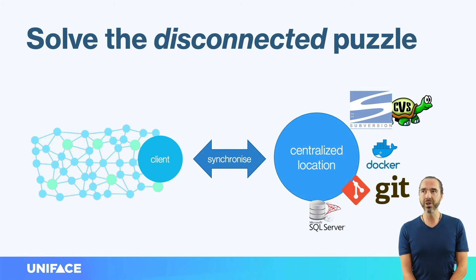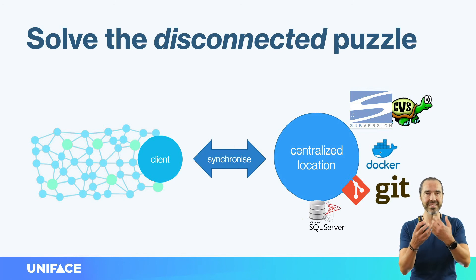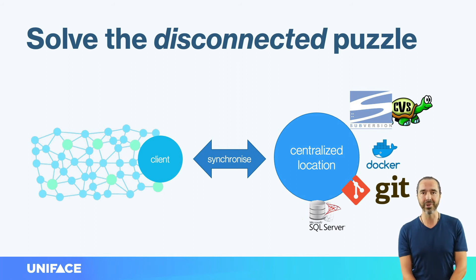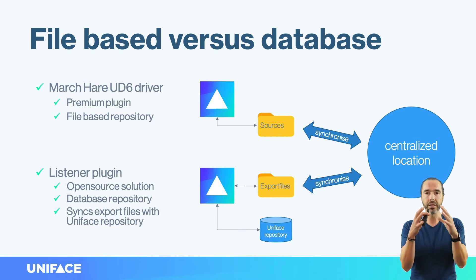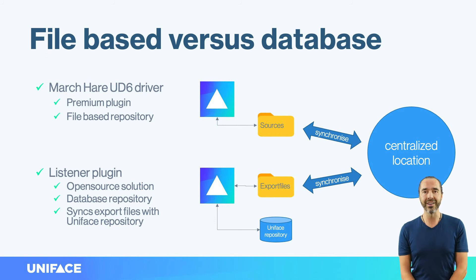I remember once when I was working for the Dutch Railway Company, we used a database for the centralized location — just a database to store our versions of files. No rocket science. And nowadays you can even use Docker for that purpose. There is one issue I think we all know: Uniface has a database, but all these version control systems work with files. When we worked with a centralized database concept at the Dutch Railway, we used files to store the versions.